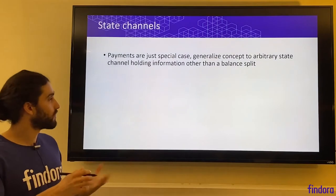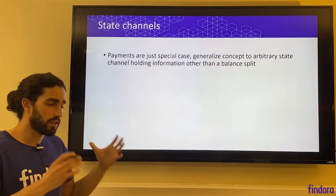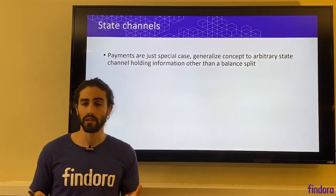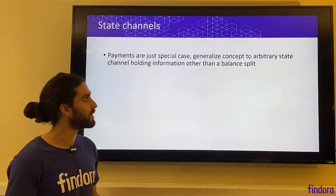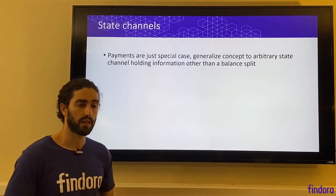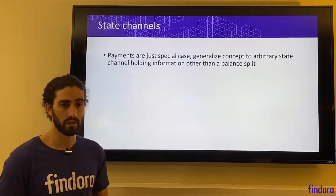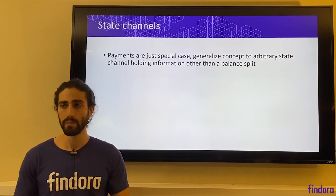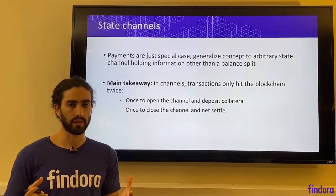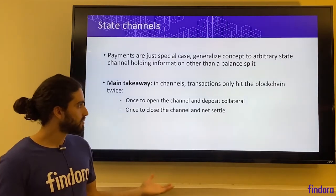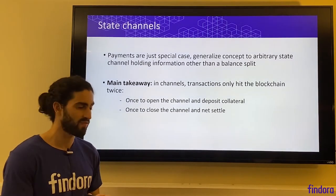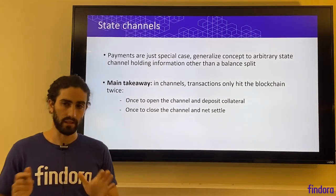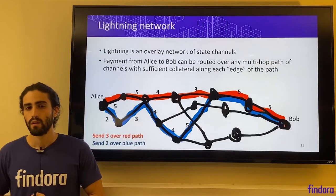More generally, this gives us a way of doing state channels — payments are really just one special case. We could absolutely generalize the concept to an arbitrary state channel which holds information other than a balance split. The main takeaway is that in channels, transactions only hit the blockchain twice: once to open the channel and deposit some collateral in the smart contract escrow account, and then once to close the channel for net settlement.